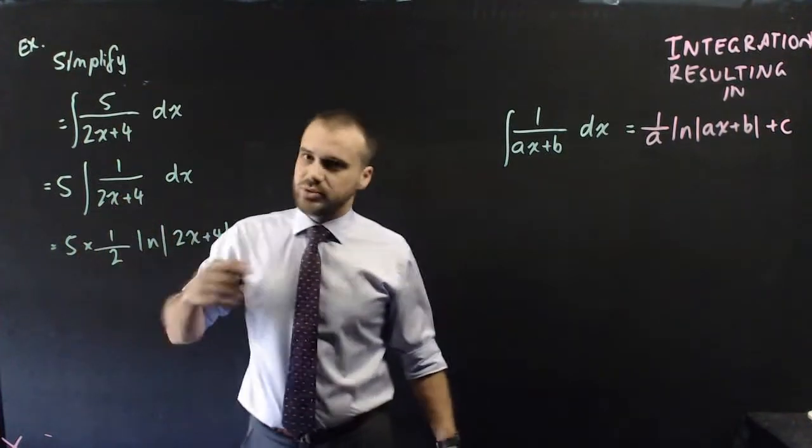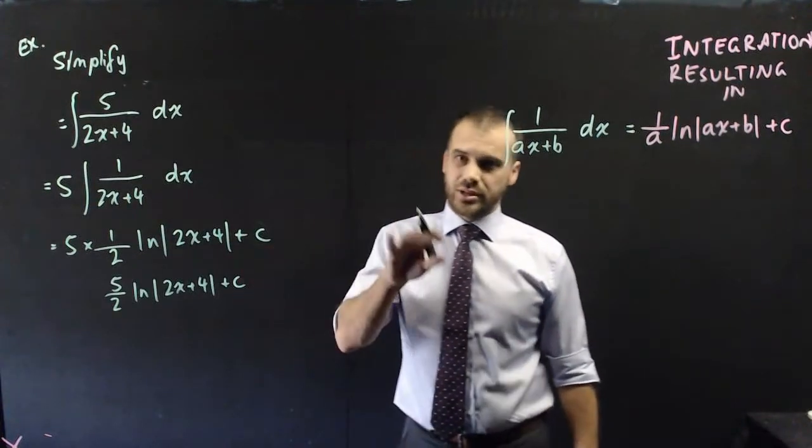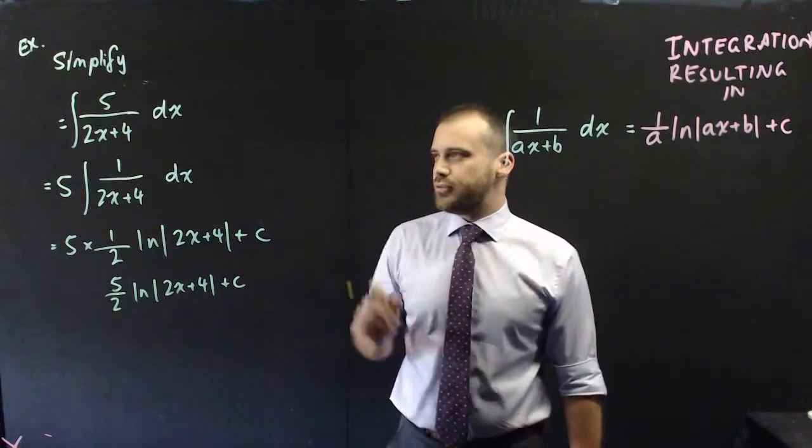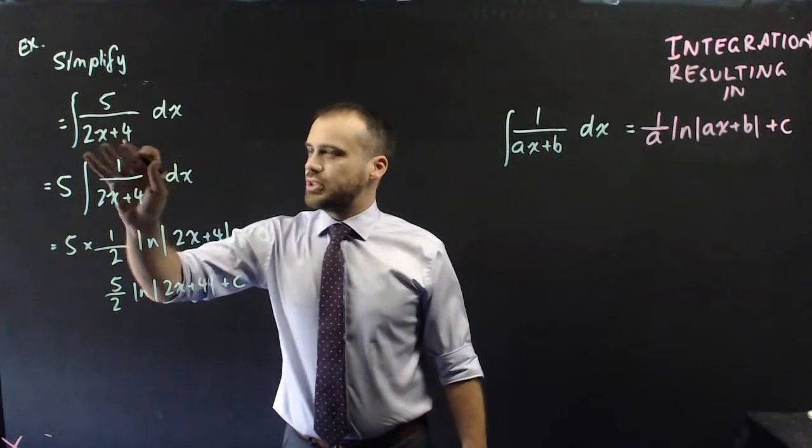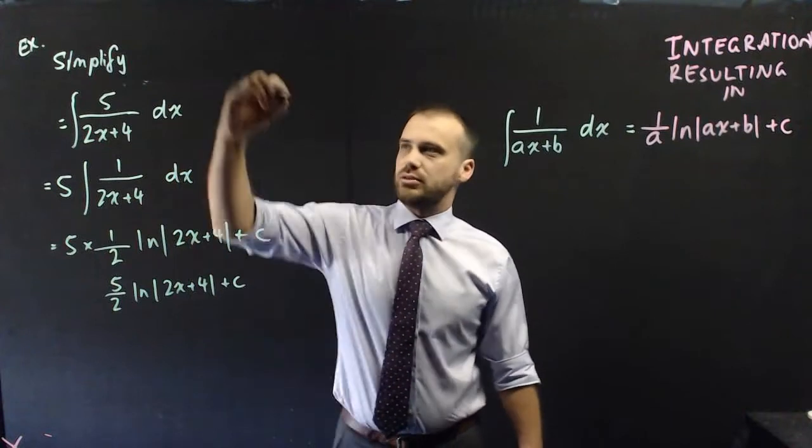And that 5 times a half is obviously 5 over 2. Now, the question as written and our solution as written is just a little bit off because this function can't exist when the bottom of it is equal to 0.